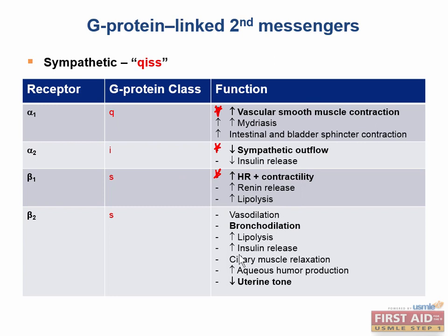Some bolded functions are pulled out as the major ones to know. Really any one of these can be tested on test day, but the bolded ones are most likely. We just covered the four main receptor subcategories for the sympathetic nervous system. Remembering these G protein-linked second messengers for test day will pay off big. You should know each bolded function at the very minimum.